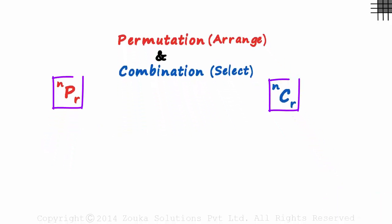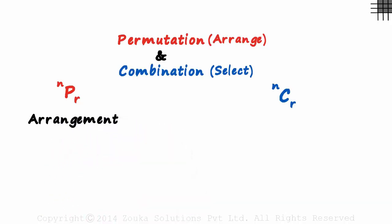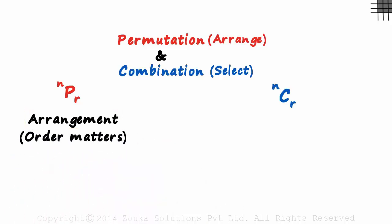Permutations is about arrangement. But what does this arrangement tell us? It tells us that the order matters. The order in which the things are placed matters. ABC and ACB will be different. 1, 2, 3 will be different from 2, 3, 1 and so on.